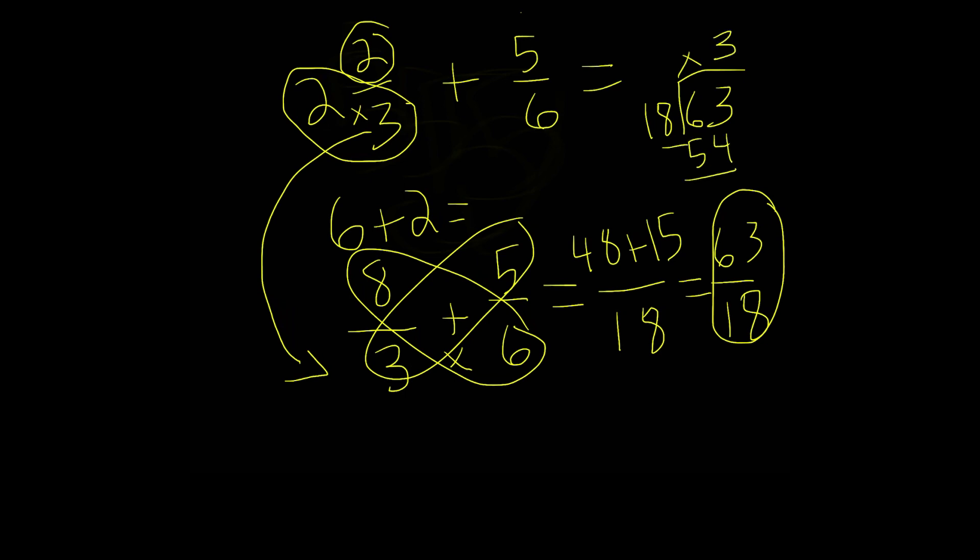So we do that, and our remainder is nine. So we have three remainder nine. So three is going to be our whole number. Nine is going to be our numerator. And remember, our denominator stays the same. So our denominator is still going to be 18. And this can be simplified to three and one half. So that's our answer in mixed number form.